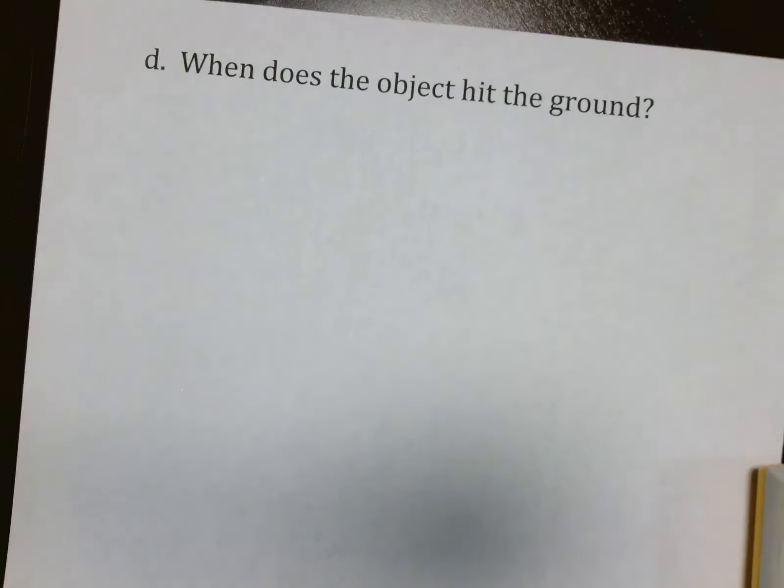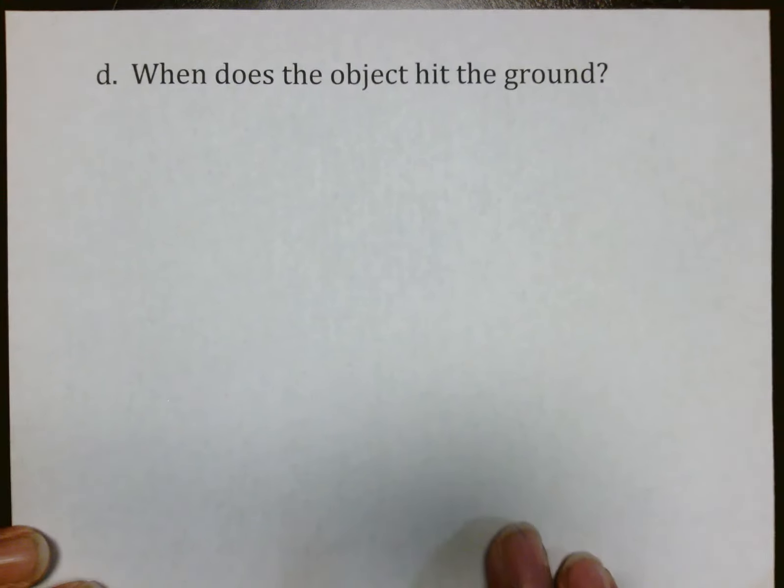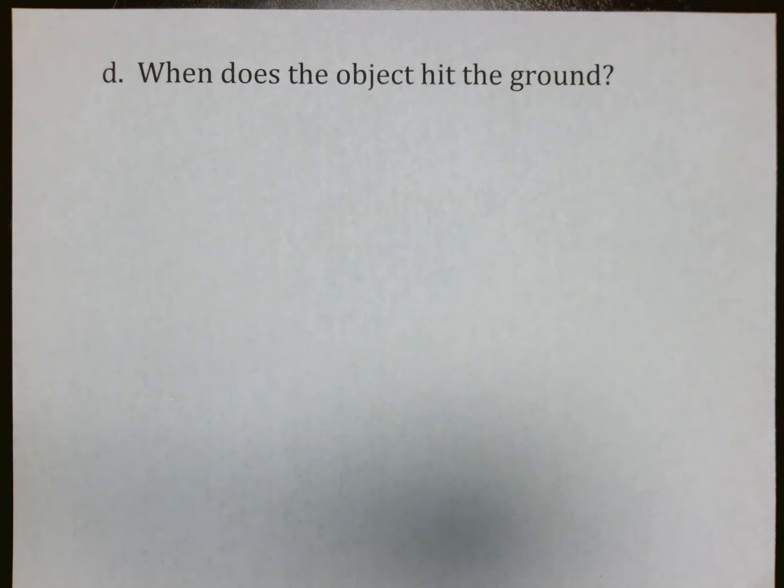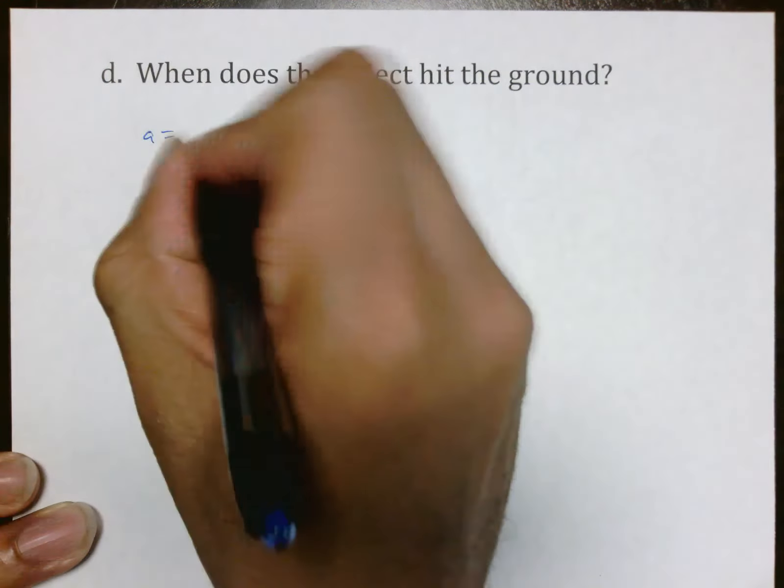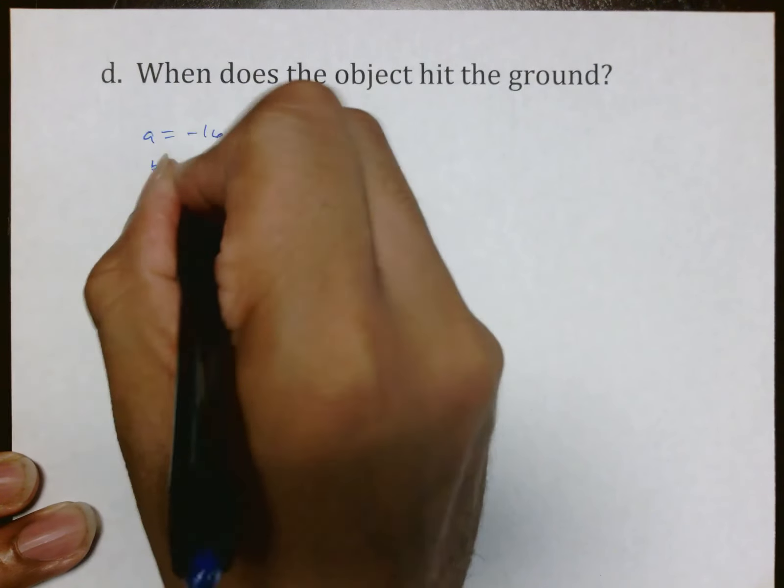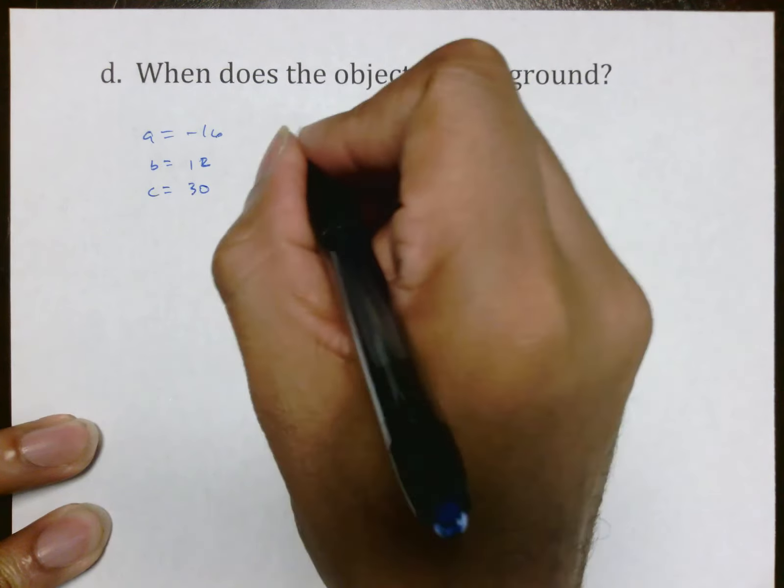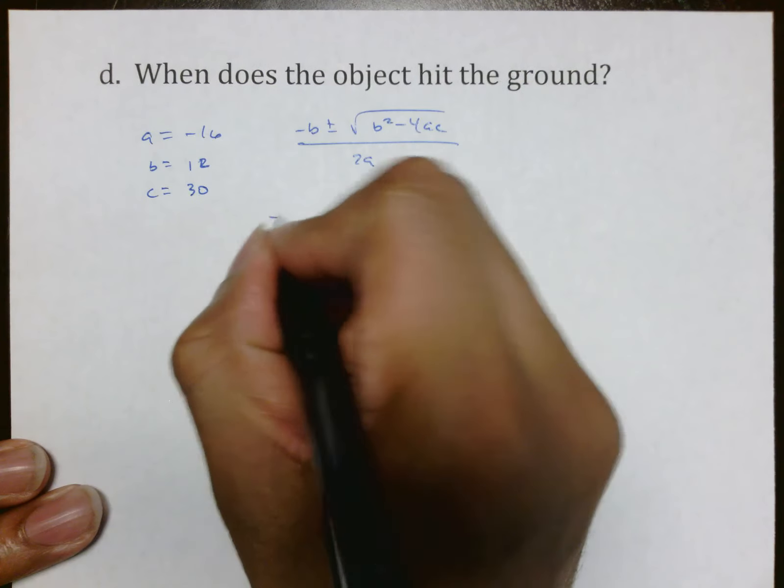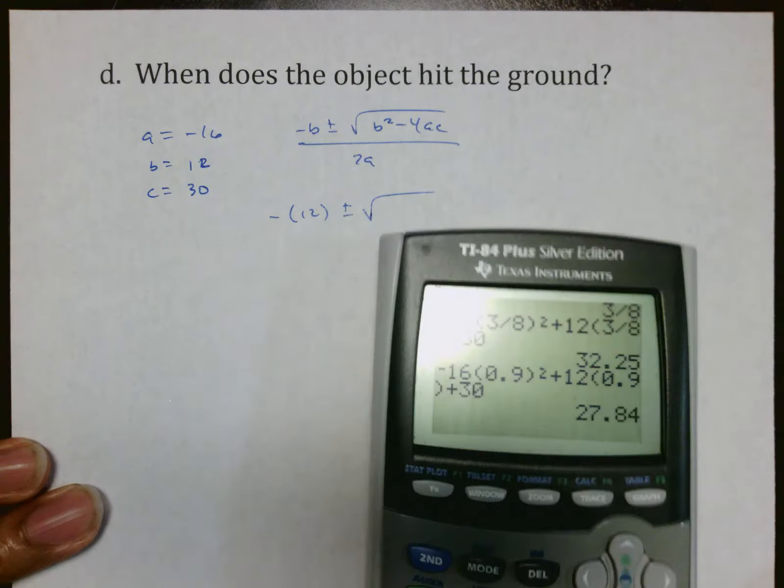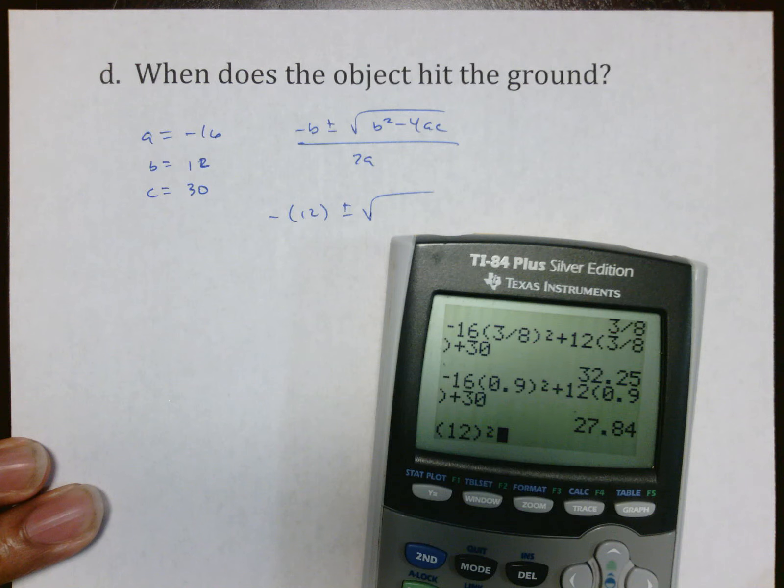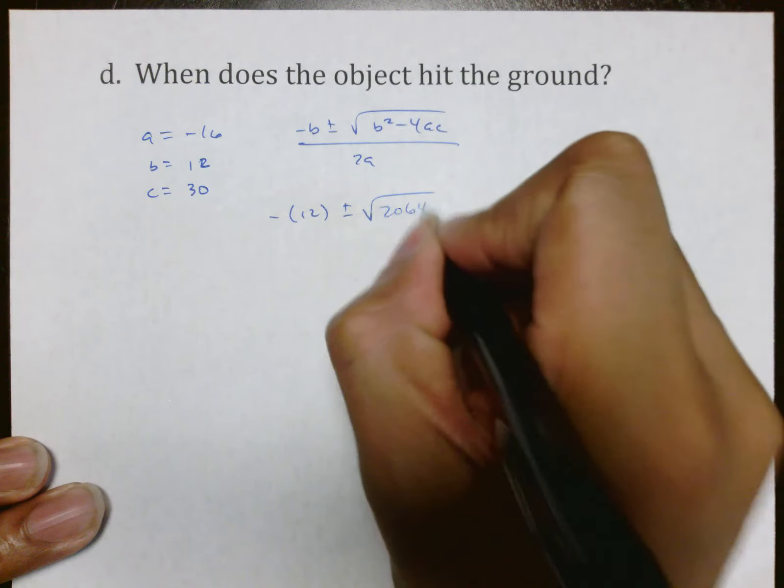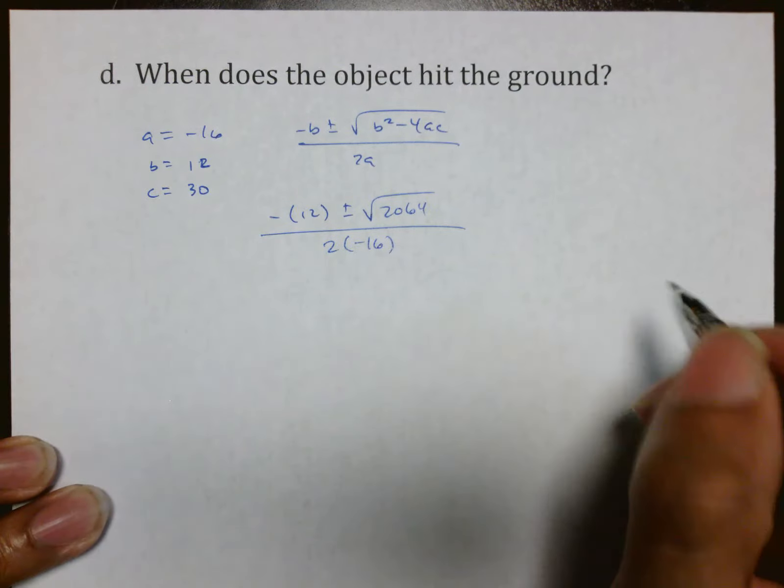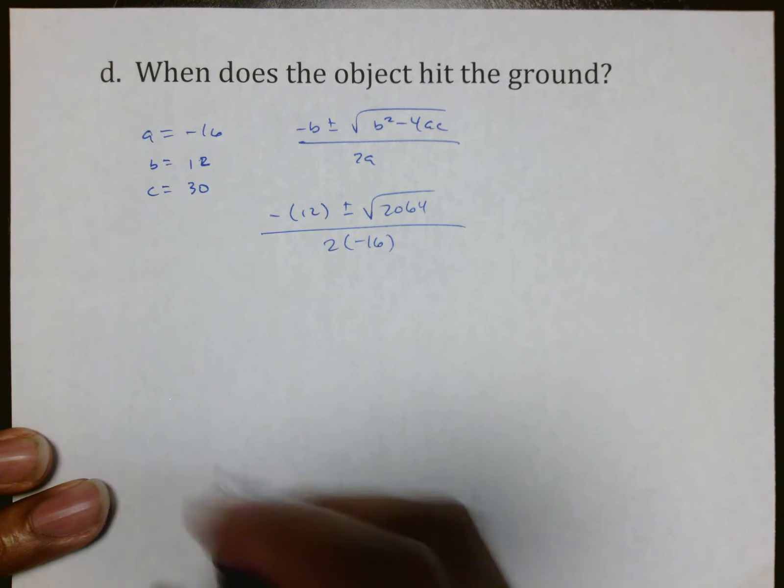And then the last question that they're going to ask you on the test is when does the object hit the ground, and the way you find that is by finding the zeros, the intercepts, the solutions, the roots of the problem, which is by using the quadratic formula. In this problem a is negative 16, b is 12, and c is 30. You then have your negative b plus or minus root b² minus 4ac all over 2a, which we then do as negative 12 plus or minus square root of 12² minus 4, negative 16, 30, which is 2064, all over 2 times negative 16.